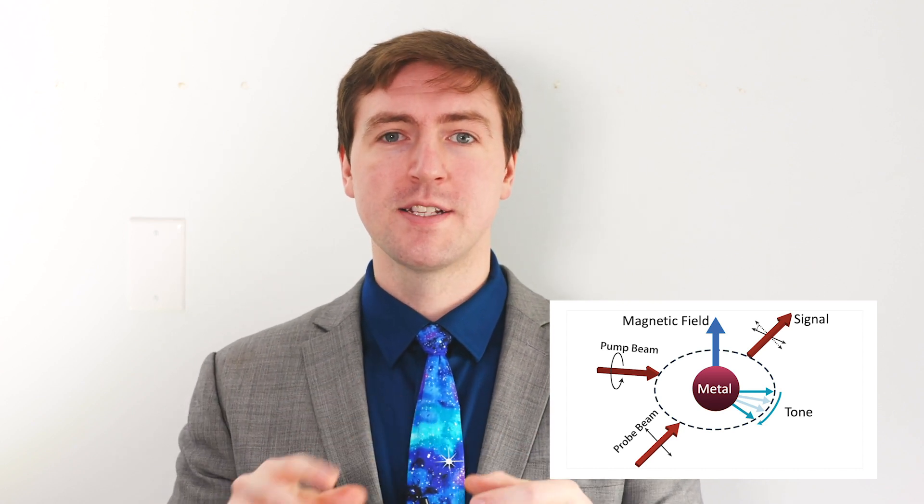Now an Optically Pumped Magnetometer is, the one we use is pretty straightforward. It's a little glass cube, and we take that cube and fill it with alkali metal. We heat it up so that the metal is vaporized. We take two lasers, put them 90 degrees to each other, then we shine them on the cube.